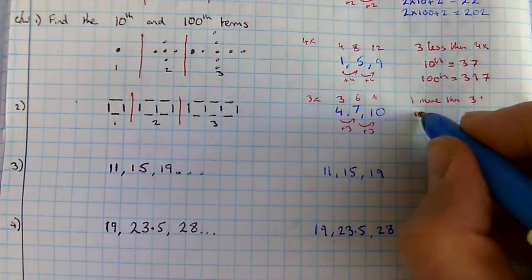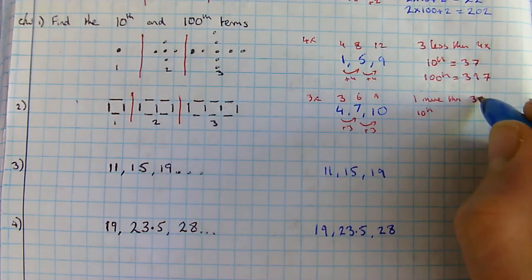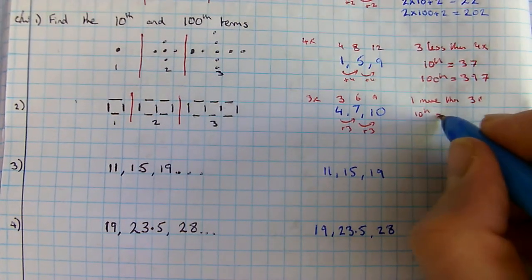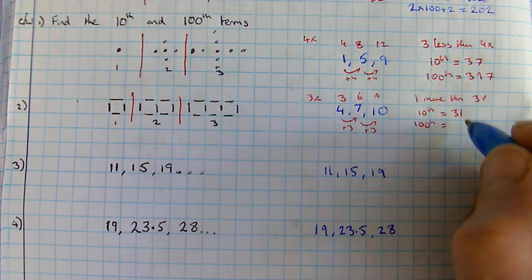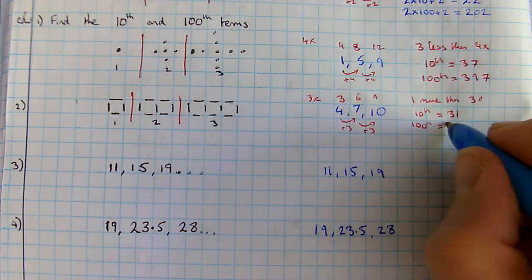The tenth is going to be three times ten, which is thirty, plus one is thirty-one. The hundredth is going to be three times a hundred, which is three hundred, plus one, which is three hundred and one.